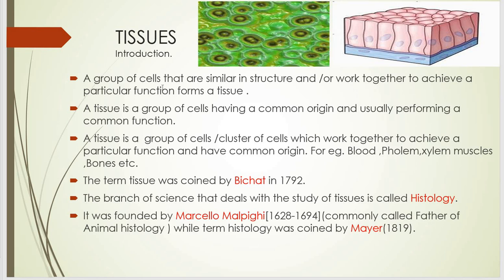For example: blood, phloem, xylem, muscles, bones, etc. The term tissue was coined by Bichat in 1792. The branch of science that deals with the study of tissue is called Histology. It was founded by Marcello Malpighi, commonly called the father of animal histology, while the term Histology was coined by Mayer.